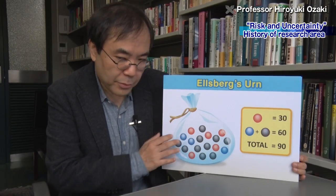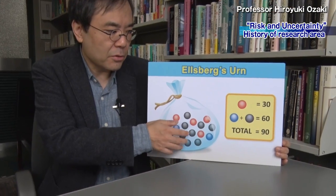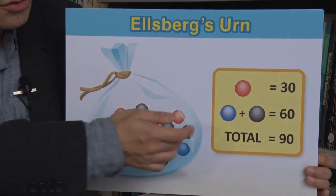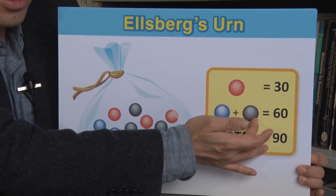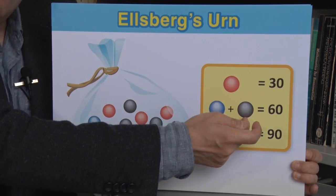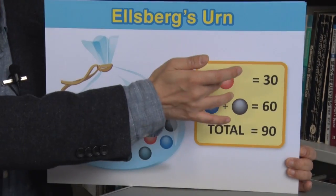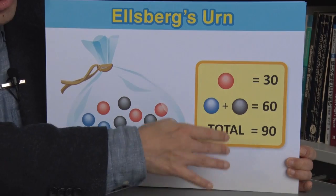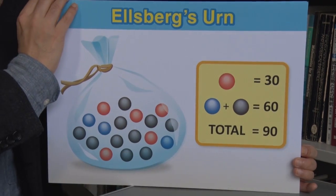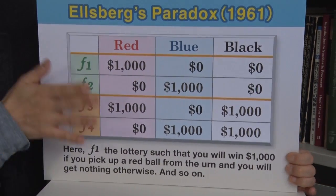He considered the following situation. There is an urn, and inside the urn there are 30 red balls. There are also blue balls and black balls, but we don't know the exact number of blue or black balls. The total number of balls is 90 — 30 are red, and the rest are blue or black, but the ratio is unknown. Then consider the following four alternatives.